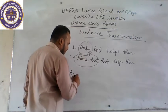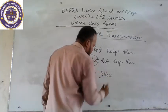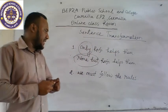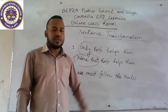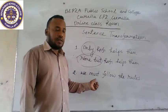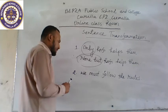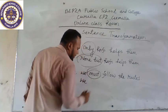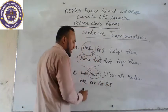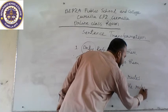The second rule: 'We must follow the rules.' If you want to make it negative, we should use 'cannot but' instead of 'must.' So in the negative form, instead of 'must,' we write 'cannot but.' The sentence turns into: 'We cannot but follow the rules.' The sentence has turned into negative.